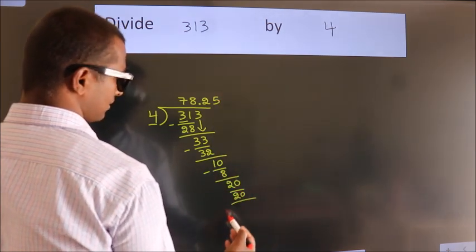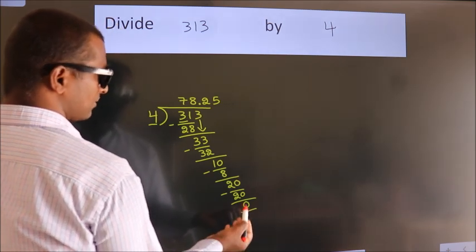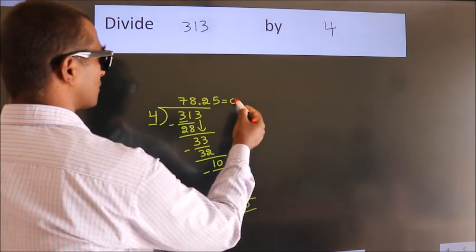Now we subtract. We get 0. We got remainder 0. So this is our quotient.